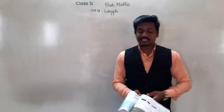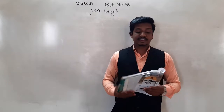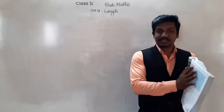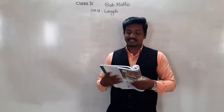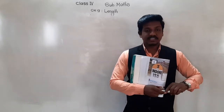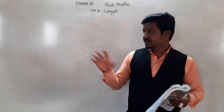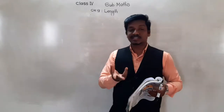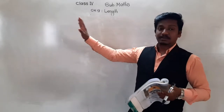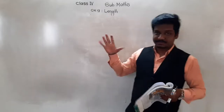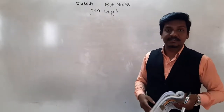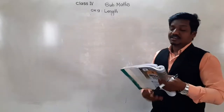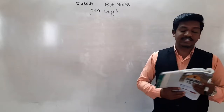Open your textbook to page number 125. Let us revise some commonly used non-standard units of length. Non-standard means things like the hand span — it is not standard because if I measure and you measure the length, the result will not be the same. So we cannot say exactly what the length of this blackboard is using hand spans. Suppose it is 20 hand spans for me, but it could be 25 or 30 for you.